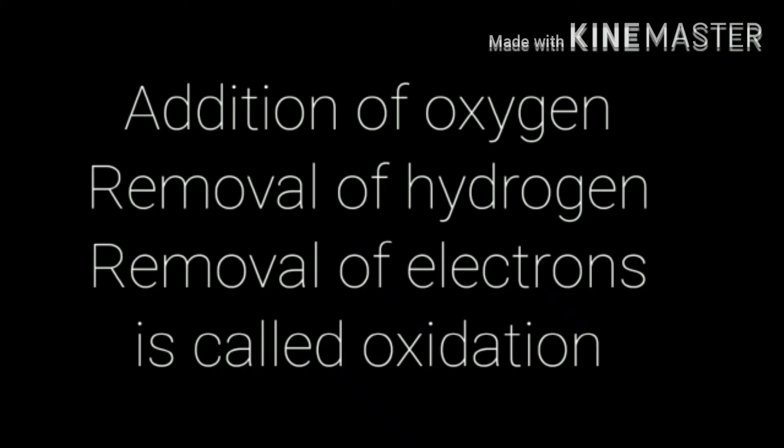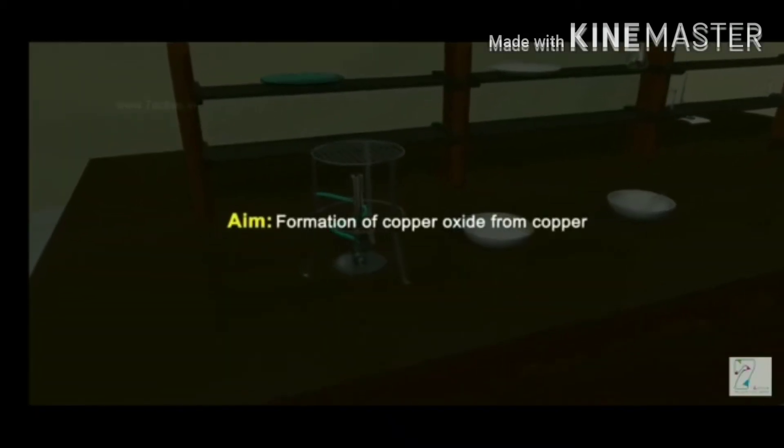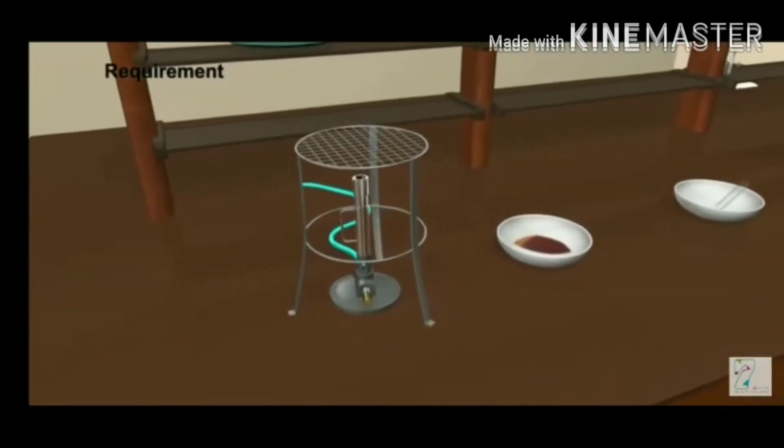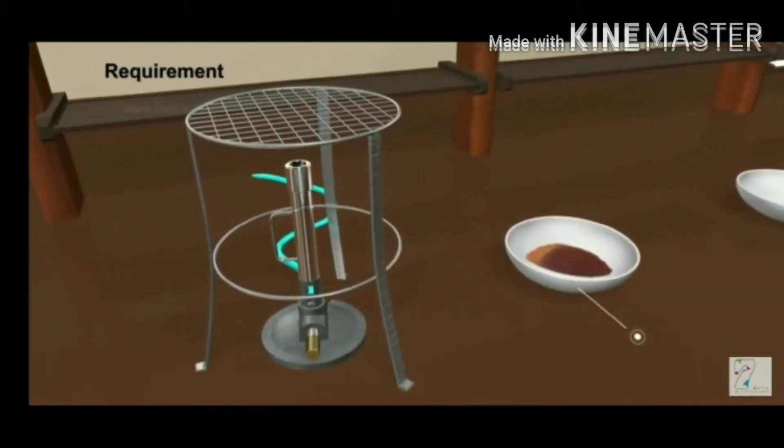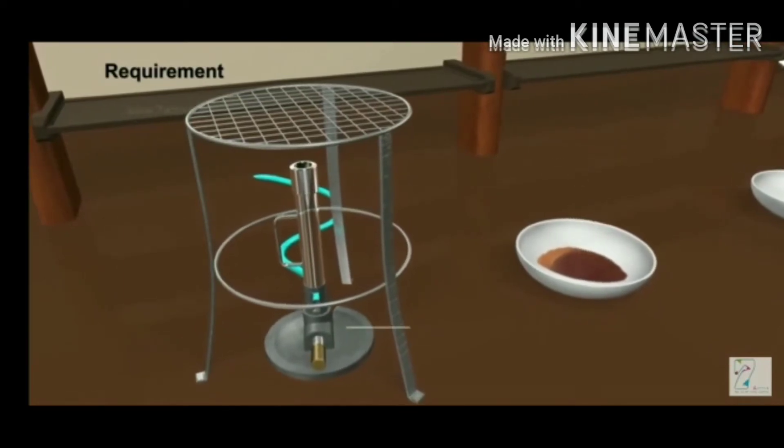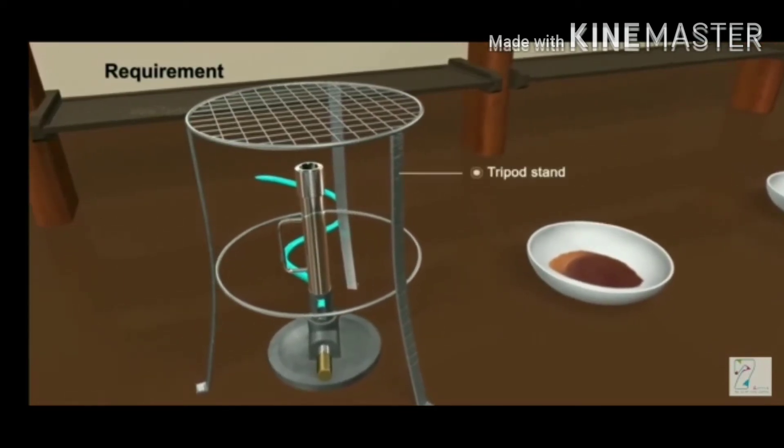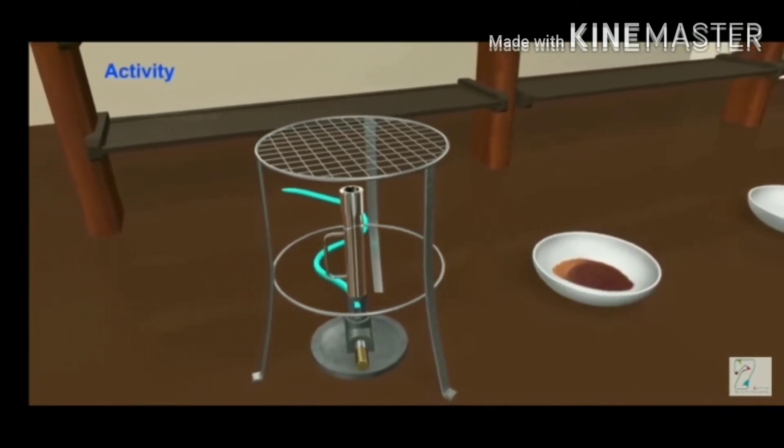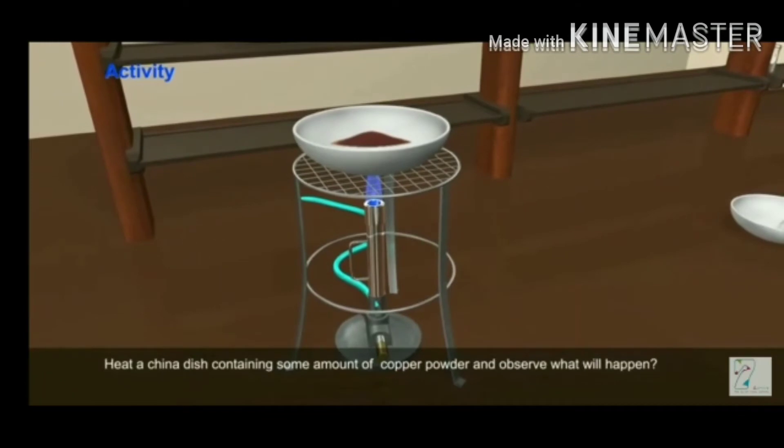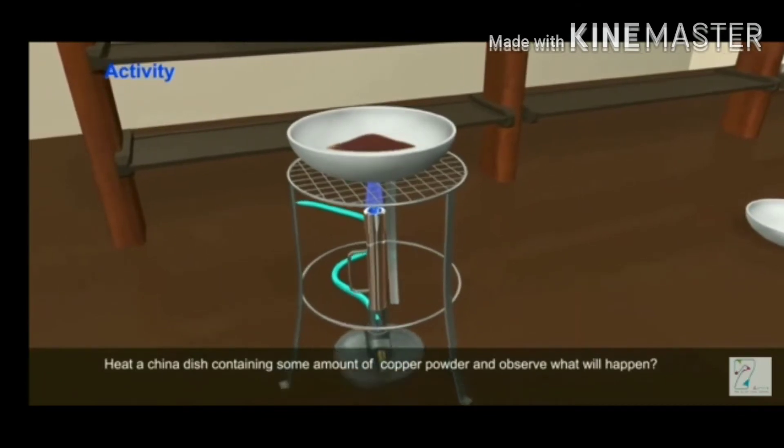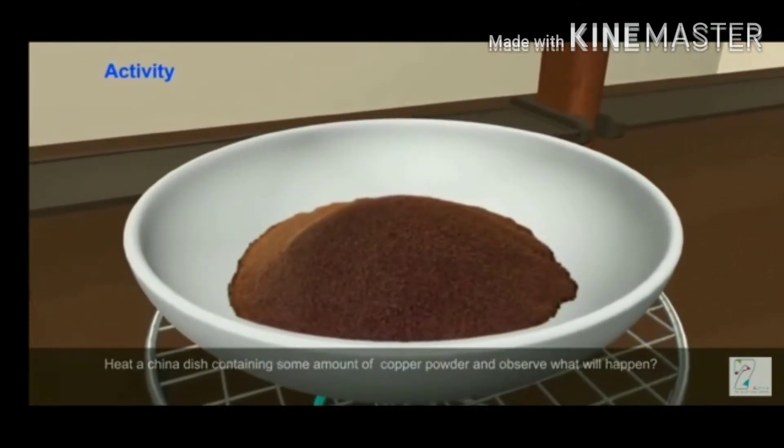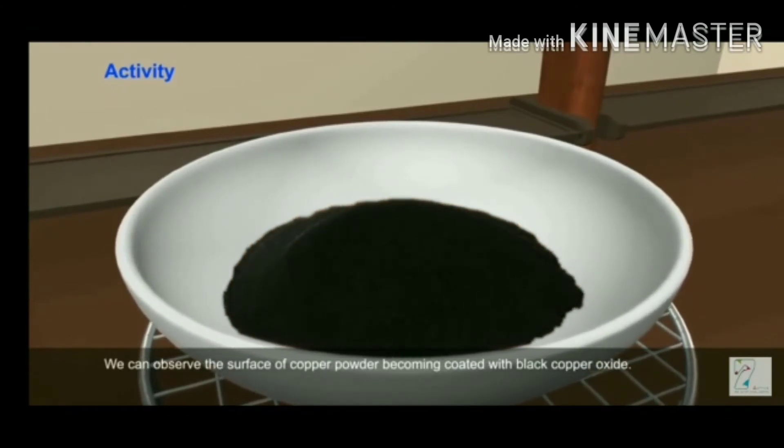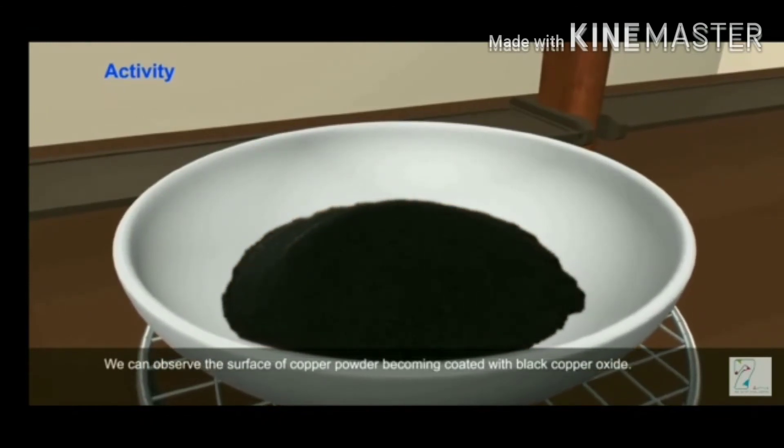In this activity we are going to form copper oxide from copper. For that purpose we require a china dish, copper powder, tripod stand, wire gauze. Take some amount of the copper in the china dish and place it on the wire gauze on the tripod stand. By going on burning with Bunsen burner, the brown colored copper changes to black color.